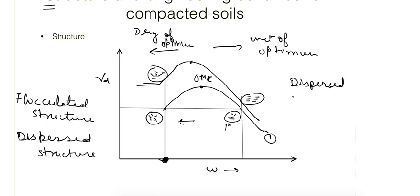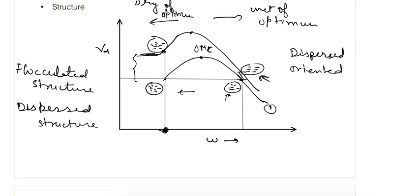Or we can say more oriented, for increasing the compactive effort. On the wet side of optimum also, the arrangement or alignment of the particles gets dispersed, but the increase in unit weight on the dry side of optimum is more if we compare it with the wet side of optimum.